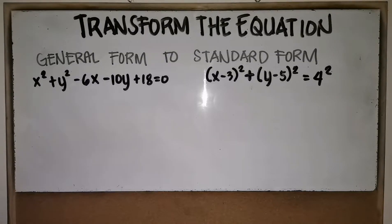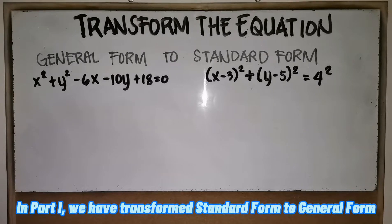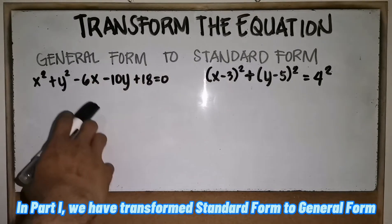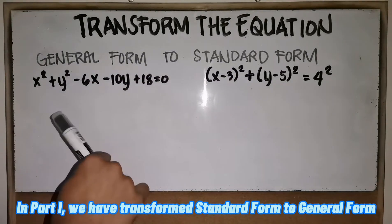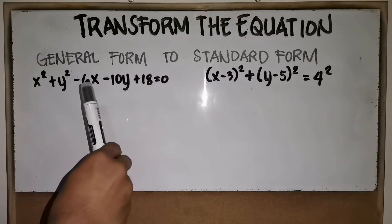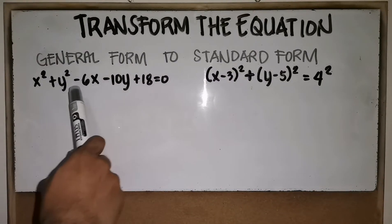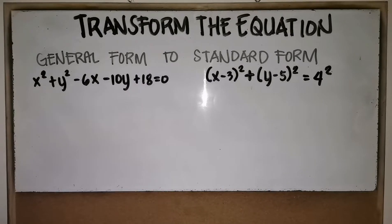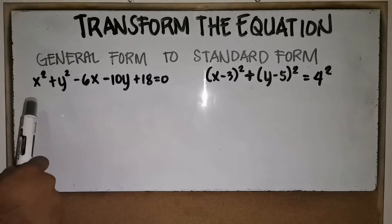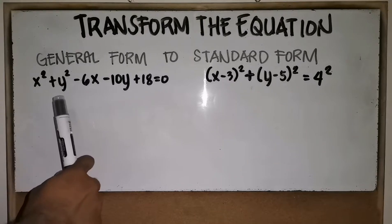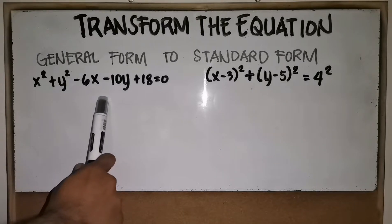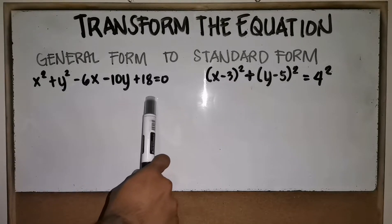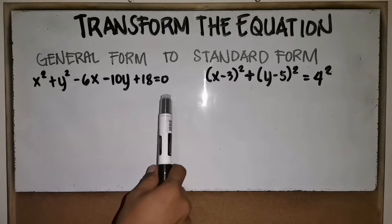Now let's transform the equation of the circle. We have already transformed standard form to general form. Now let's transform a general form to standard form. The example is: x squared plus y squared minus 6x minus 10y plus 18 equals zero.